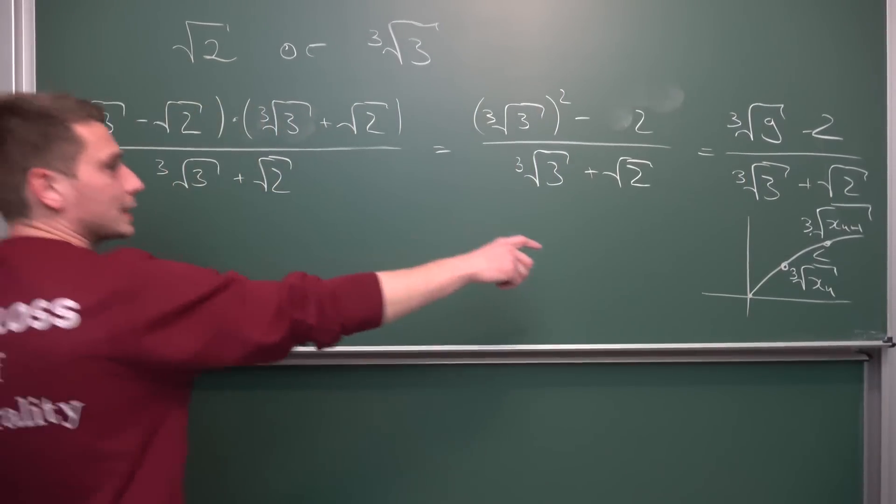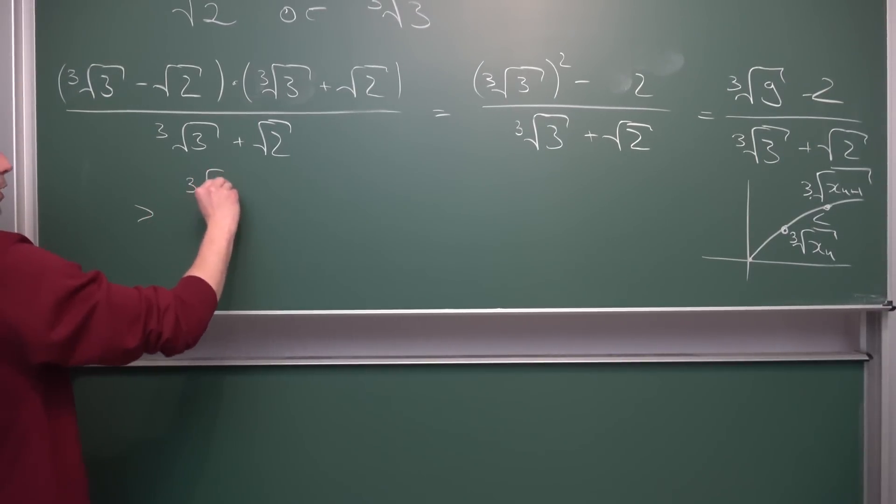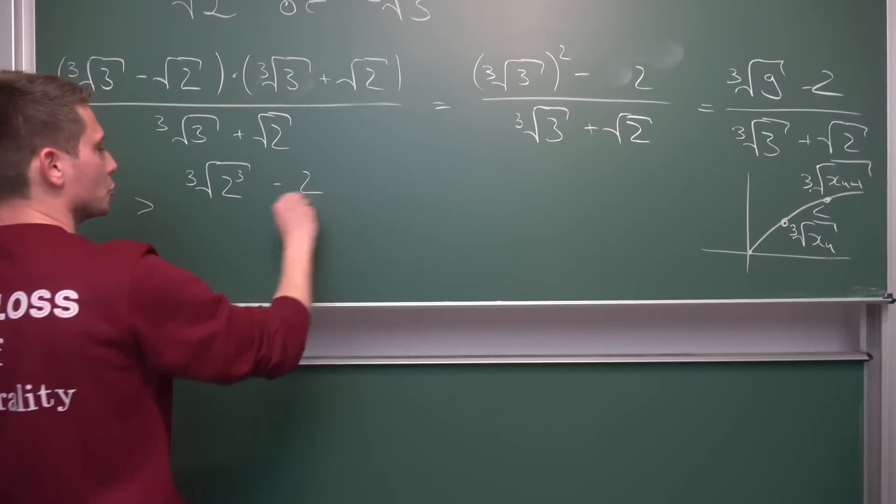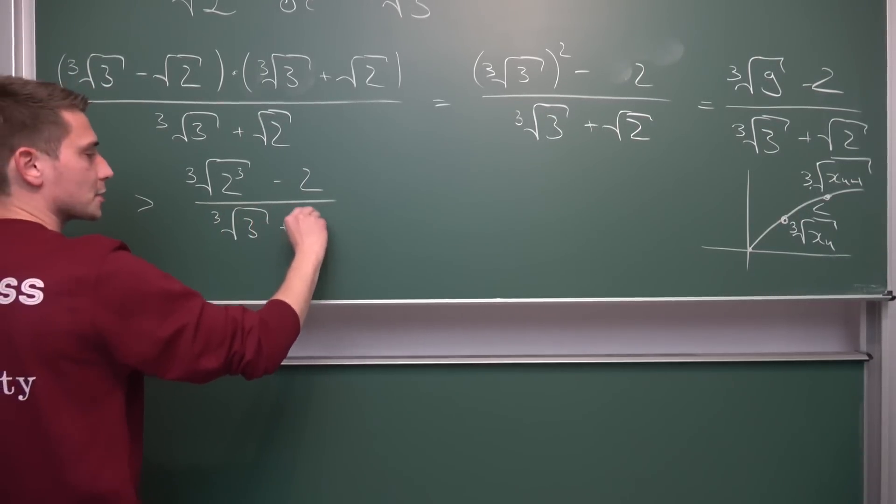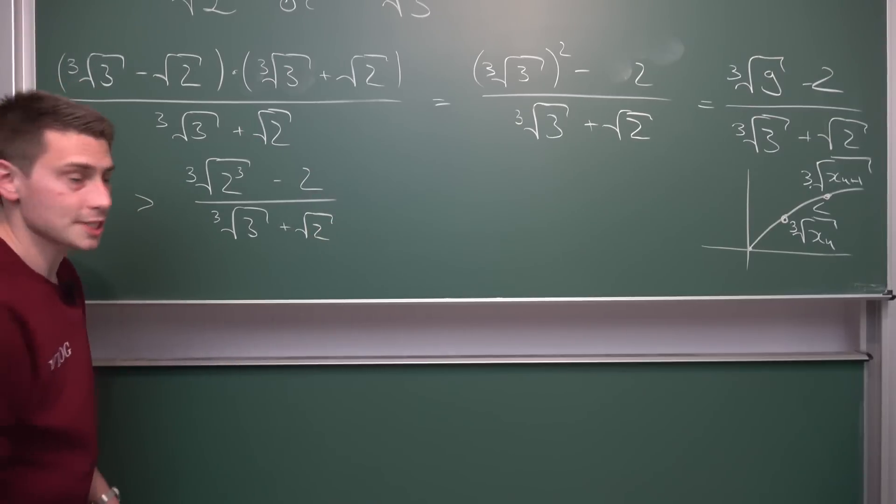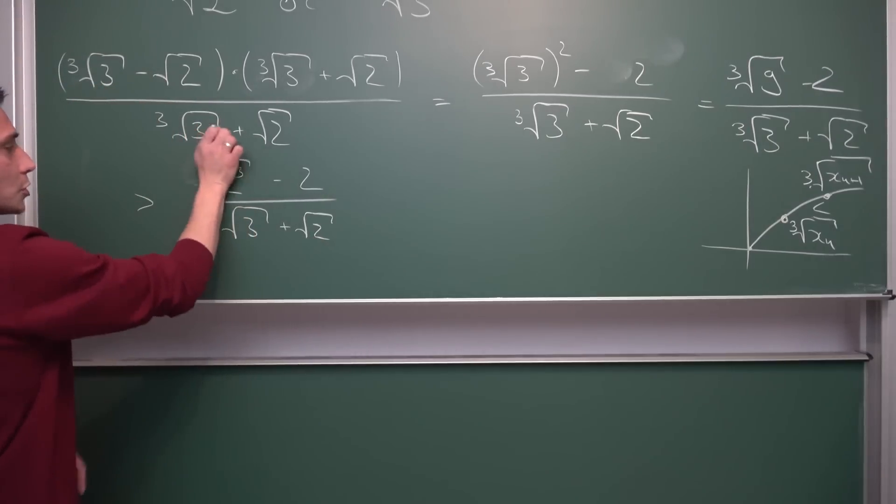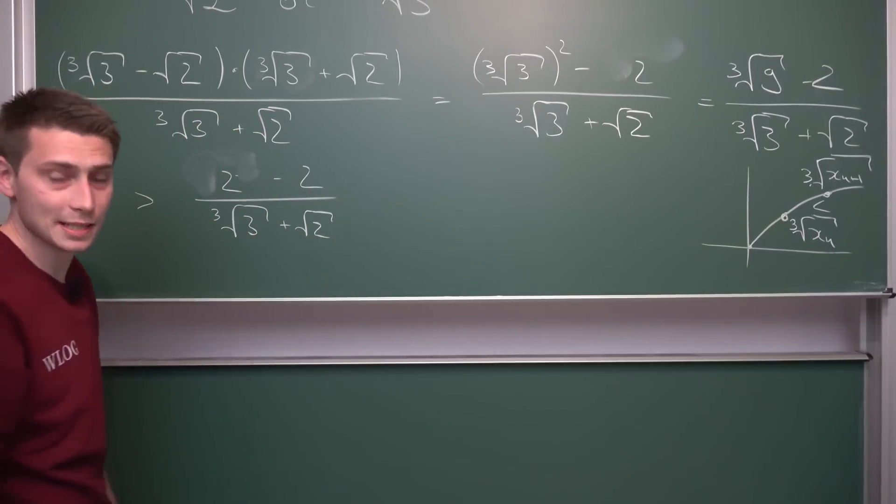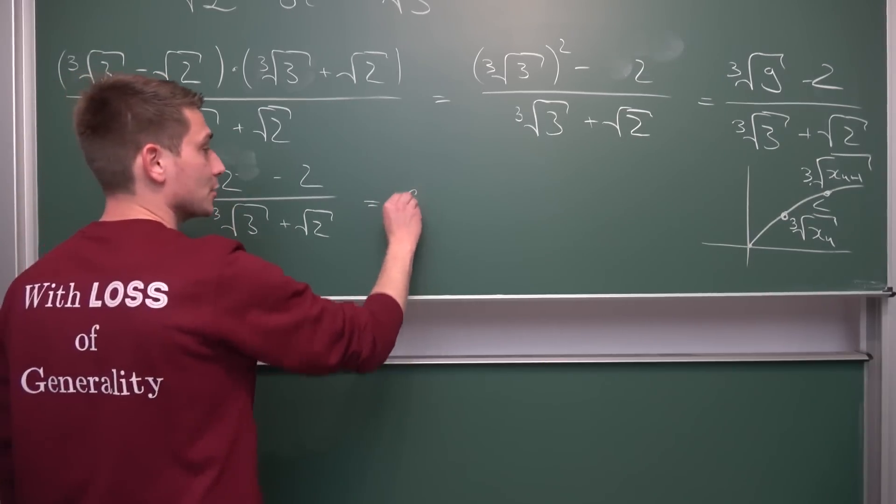Meaning overall, what we got is that this part that we have right here is strictly greater than the cube root of 2 to the third power minus 2 divided by the cube root of 3 plus the square root of 2. And like mentioned a second ago, our cubes are going to make our cube roots vanish, meaning we are going to get something of the form 2 minus 2 divided by something nice to look at. And 2 minus 2 by definition is 0. 0 over something positive is going to give us 0.